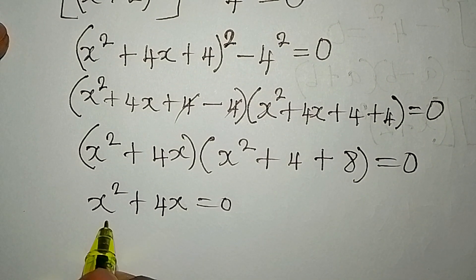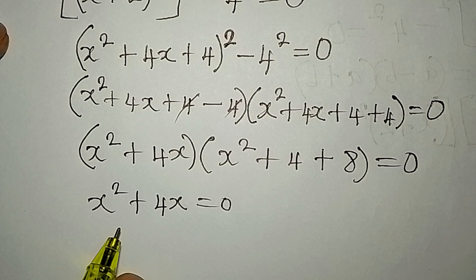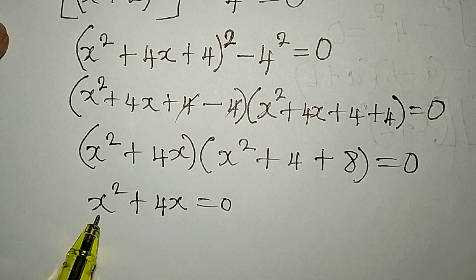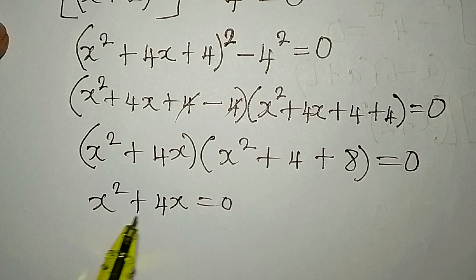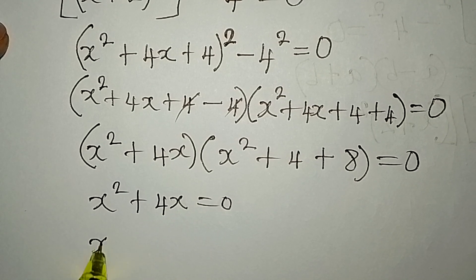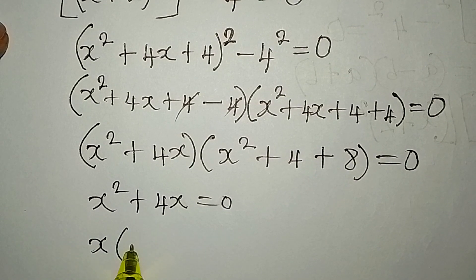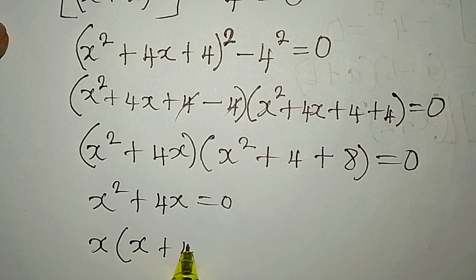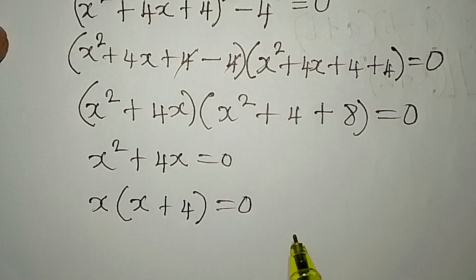From x squared plus 4x equals zero, this is a quadratic equation with highest power 2. x is a common factor, so we factor it out: x times (x plus 4) equals zero.